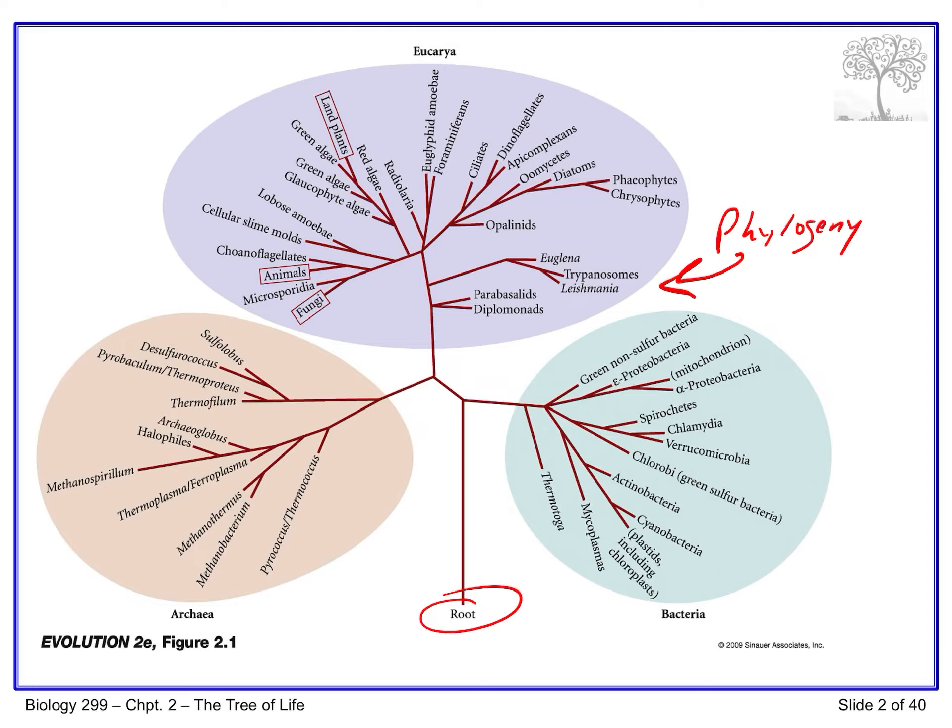Phylogenies show us the pattern of evolution from the common ancestor to its descendant species — for example, who evolved first, where anatomical or morphological features first appeared and how they were passed down. This is mostly achieved by studying modern species, but the fossil record also provides some very important information.